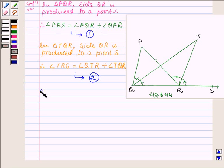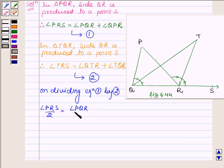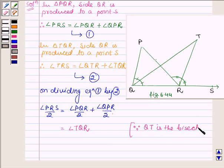Now on dividing both sides of equation 1 by 2, we have angle PRS upon 2 is equal to angle PQR upon 2 plus angle QPR upon 2.